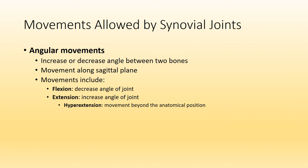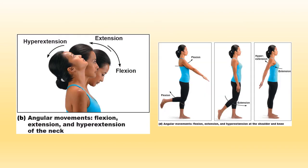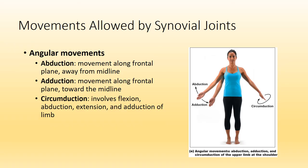Angular movements are mentioned frequently throughout the remainder of the course. They result from an increase or decrease in angle between moving bones and are an example of uniaxial movement occurring along the sagittal plane. Flexion and extension are key examples. When you pick up a textbook from a table and bring it towards your chest, that is flexion — you are decreasing the angle between the arm and the forearm. Taking that textbook from your chest and laying it back down on the table is extension — you are increasing that angle.